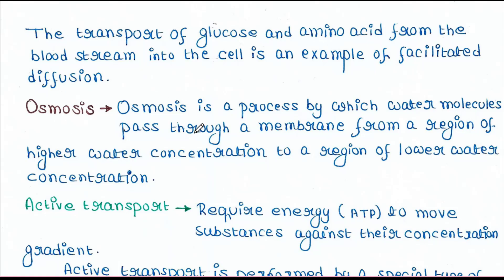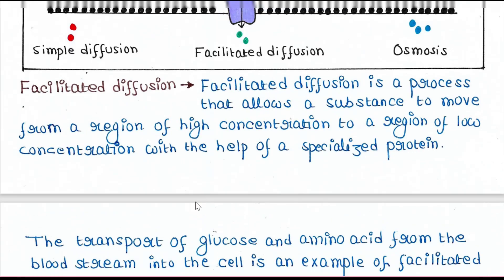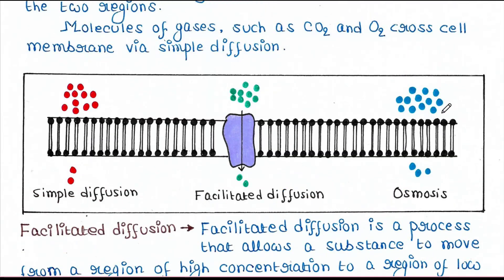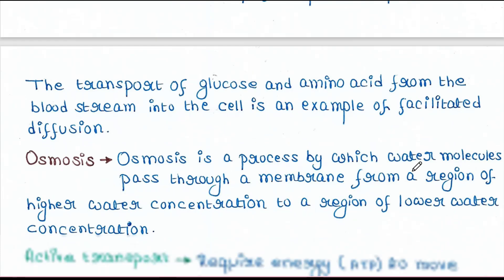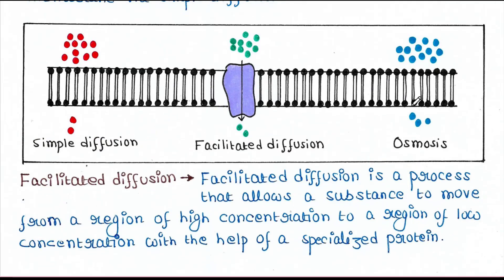Osmosis is a process by which water molecules pass through a membrane from a region of higher water concentration to a region of lower water concentration. These water molecules cross the plasma membrane from high to low concentration, and here also they don't require any protein, just like simple diffusion.